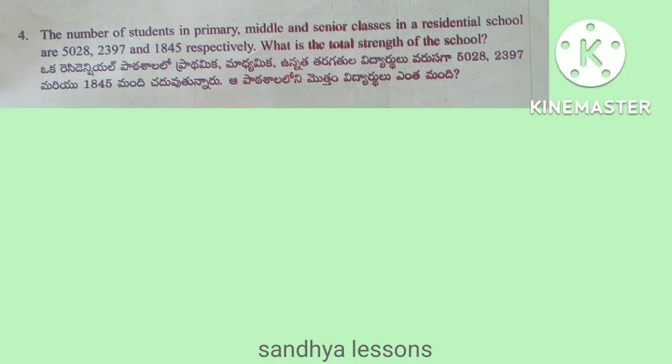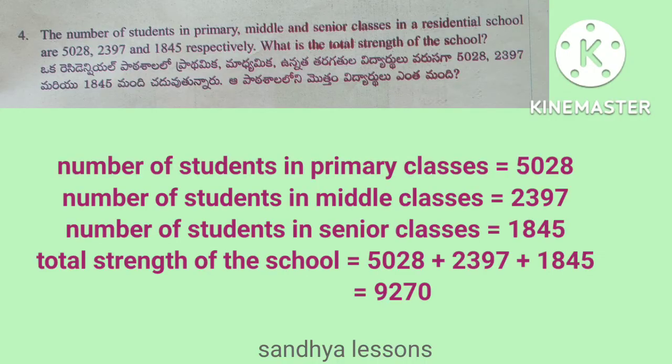Problem 4: The number of students in primary, middle and senior classes in a residential school are 5,028, 2,397 and 1,845 respectively. What is the total strength of the school?